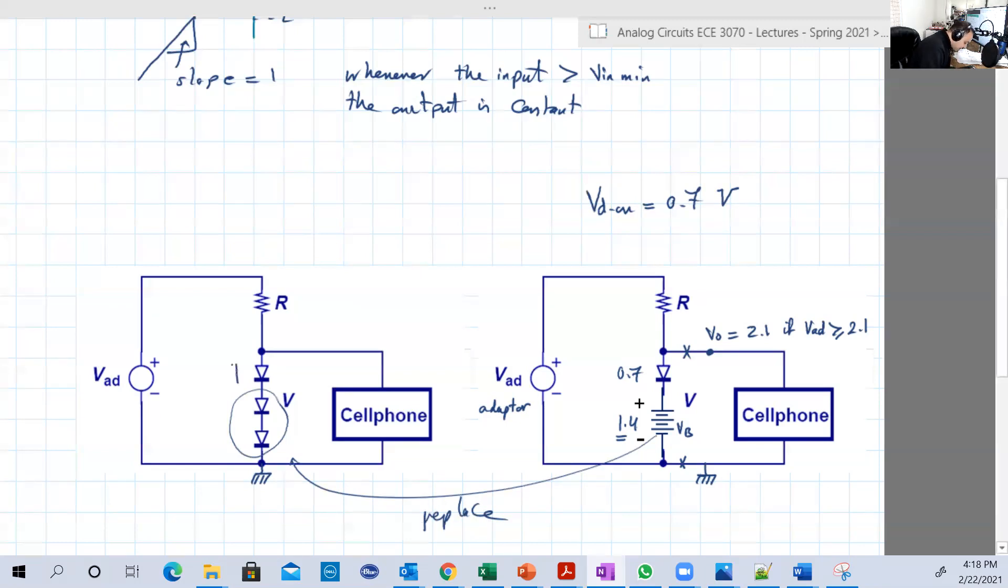Because basically here again, when the input is greater than or equal to 2.1, this guy will be on, this guy will be on, this guy will be on, and all of them have 0.7 at the same time. So the total voltage here is 2.1 volts, just like the first one. So this is basically equivalent.